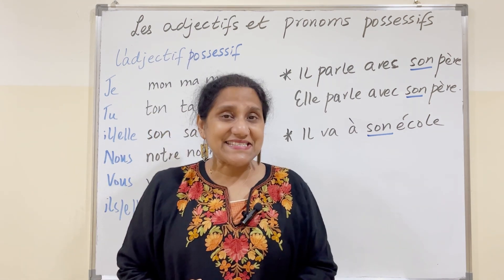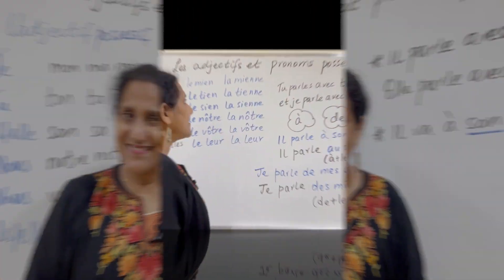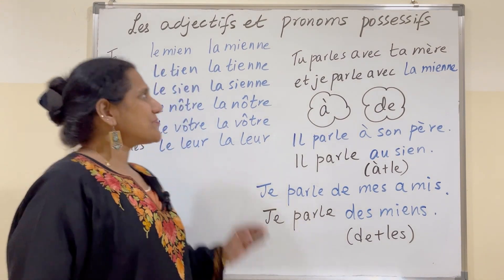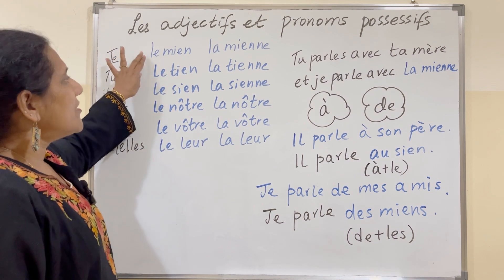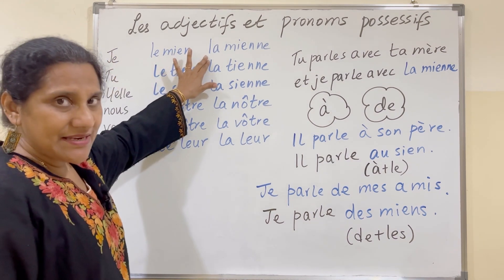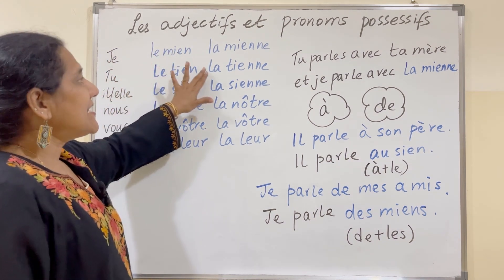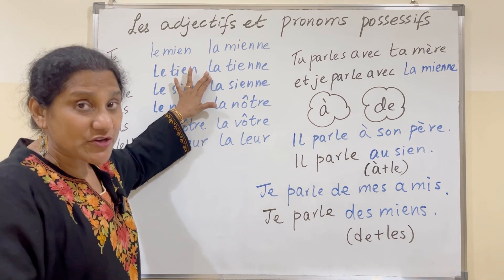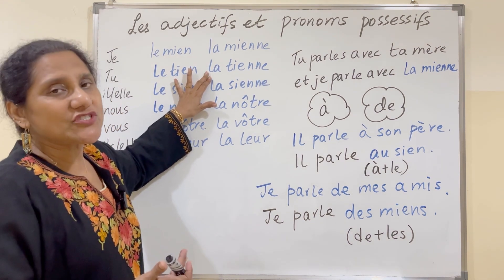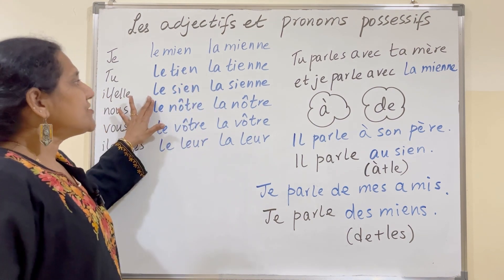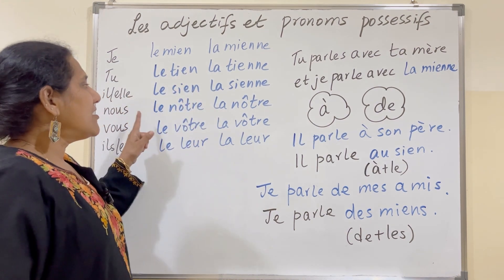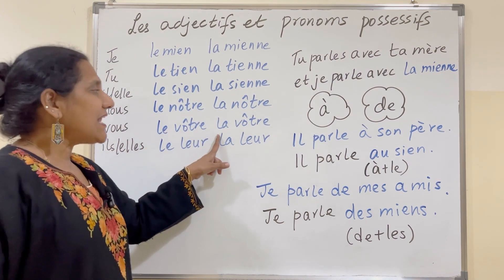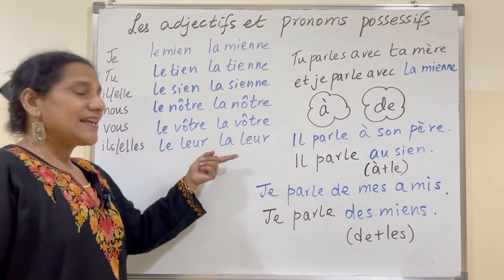Now let's look at possessive pronouns. Possessive pronouns are: le mien, la mienne, le tien, la tienne — I've shown you only the singular form; you can refer to my video where I have dealt with the topic in detail — le sien, la sienne, le nôtre, la nôtre, le vôtre, la vôtre, le leur, la leur.